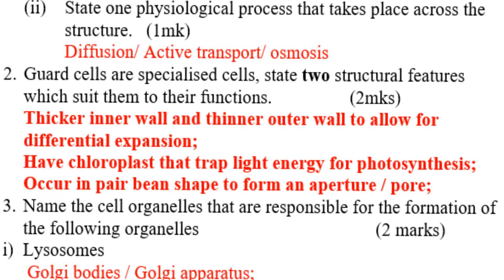Question two: State one physiological process that takes place across the structure. The answers are: diffusion, active transport, and osmosis.